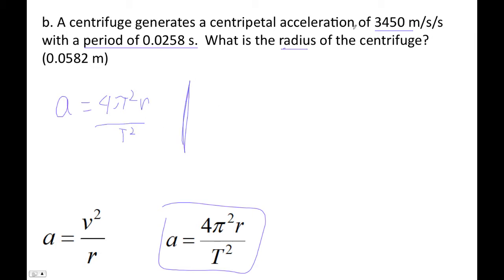So this is our acceleration, so 3450 is equal to 4π² times - what's our radius? Oh, we're trying to find the radius. Okay, there we go. And then this is our period, so 0.0258 squared, right?